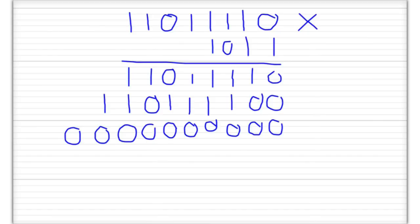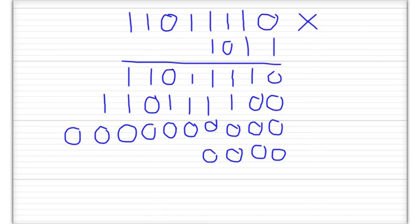Now we're at the last digit, so we need to shift over and put three 0s there. Then: 1 times 0 is 0, 1 times 1 is 1, 1 times 1 is 1, 1 times 1 is 1, 1 times 0 is 0, 1 times 1 is 1, and 1 times 1 is 1. That's all our multiplication done.